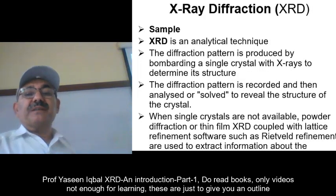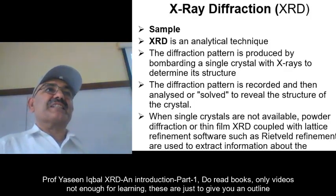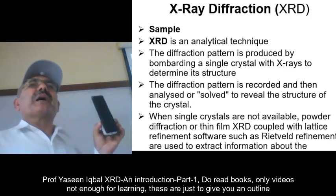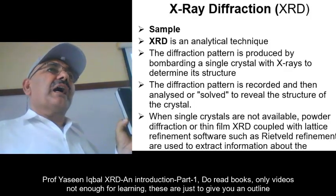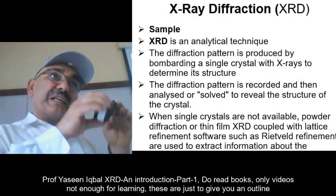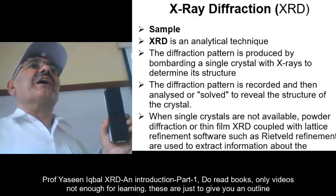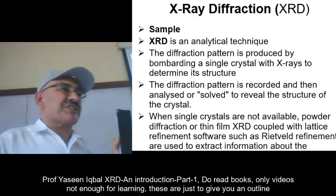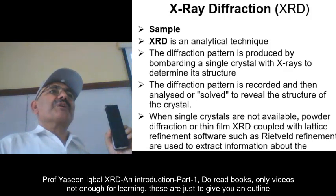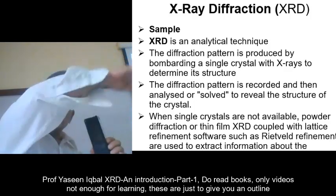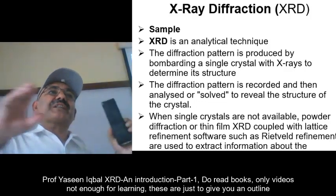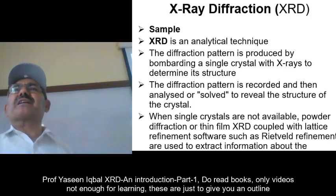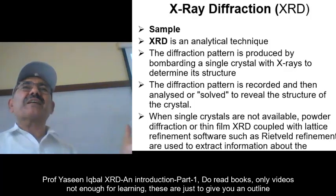The diffraction pattern is produced by bombarding a single crystal with an X-ray beam. Single crystal means you have a large crystal, and you bombard X-rays from different directions upon it, or rotate the crystal in front of the beam, to get diffraction from different sides. Usually, however, people don't have such large crystals, and there are very few single crystals large enough to organize in a sample holder.